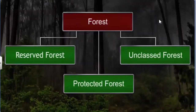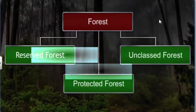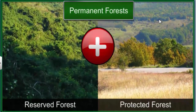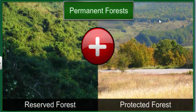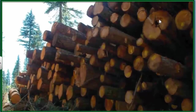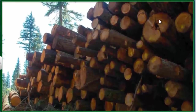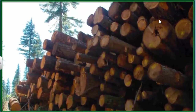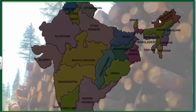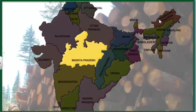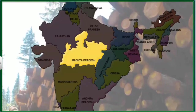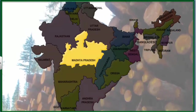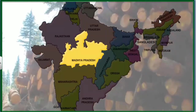Reserved and protected forests are together called permanent forest estates, or simply permanent forests. They are closely guarded and maintained to conserve and collect timber and other forest produce. Madhya Pradesh has the largest share of permanent forests in India, with almost 75% of its forests classified as permanent forests.